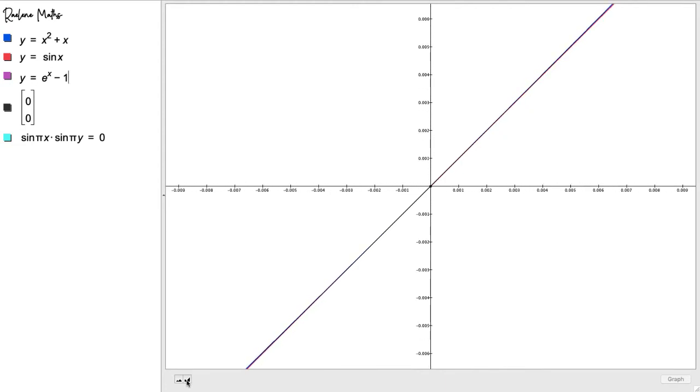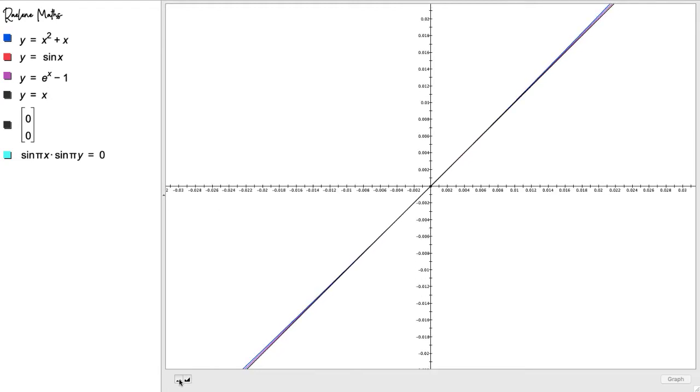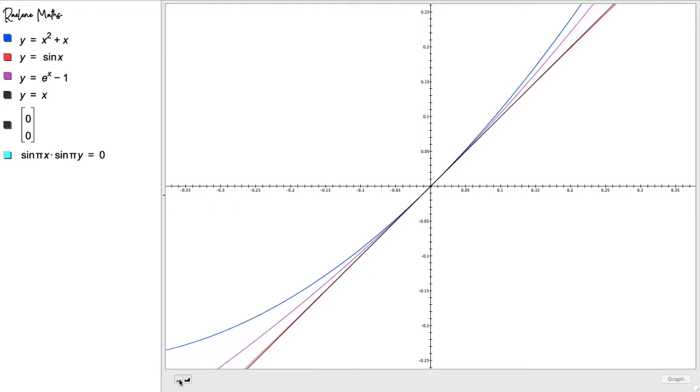And the line that they look like is y equals x. When we zoom out, we see again that the three curves and the line are all different graphs.